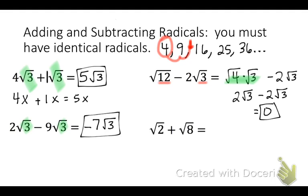With our next problem, the insides again aren't the same, so we need to simplify one of them. We can't simplify square root 2 because there's no perfect square that divides 2. So we simplify square root of 8. Looking at our list of perfect squares, 4 divides 8, so we rewrite it as square root 2 plus square root 4 times square root 2, because 4 times 2 is 8.